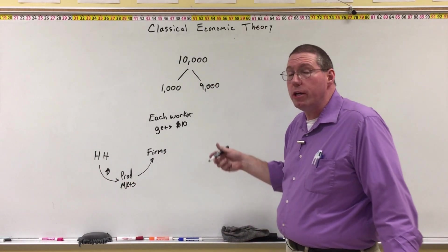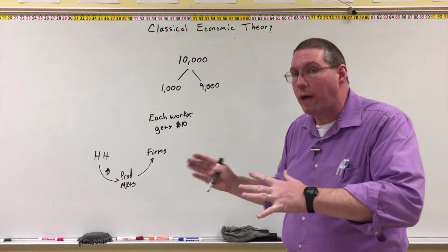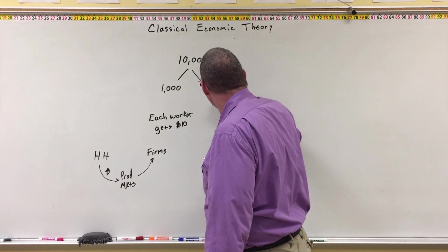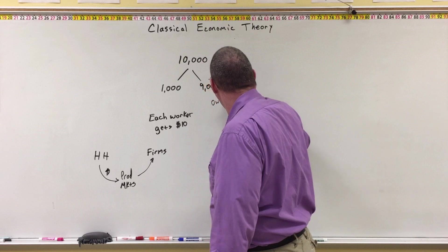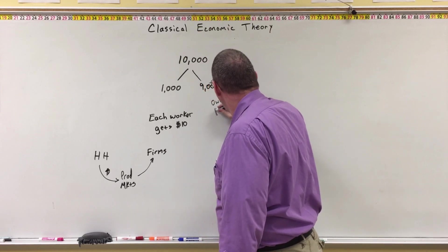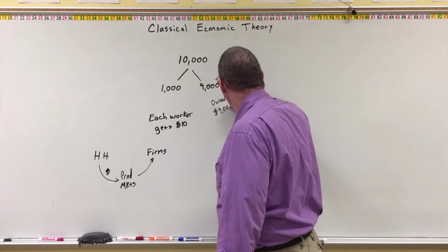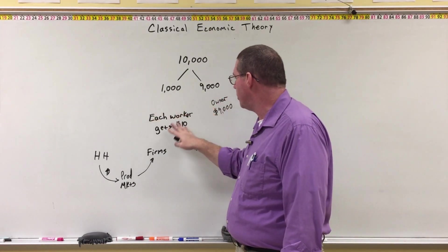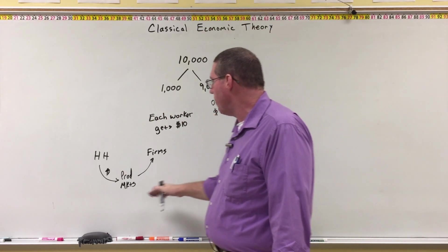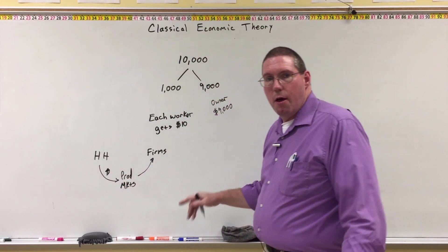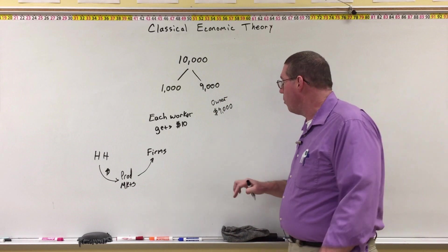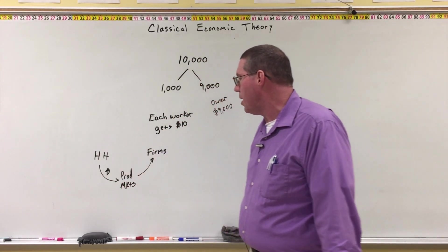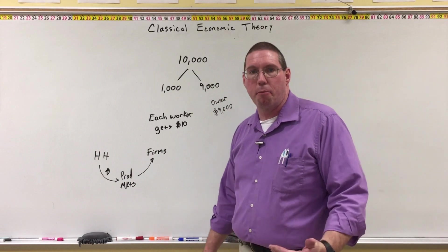Now this $9,000 is really only going to one person or one household. Therefore, the owner's household has $9,000. Well, what's the owner going to do with $9,000? If the owner is another person like each of the workers, the owner isn't going to buy that much stuff either. What they were arguing was that more of this money should go to the workers so that there will be more demand in the product markets.